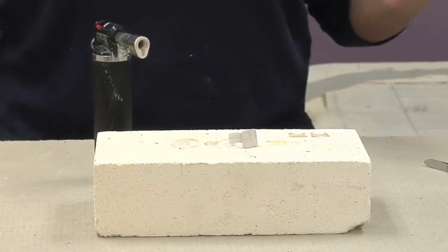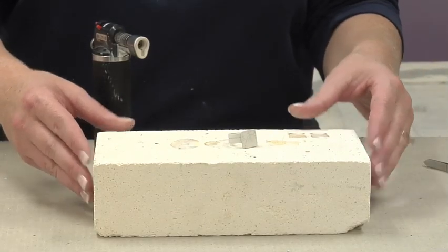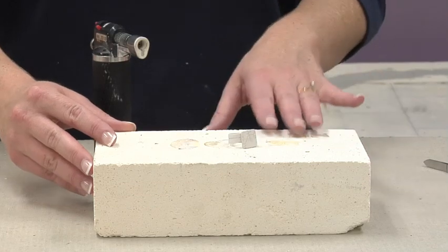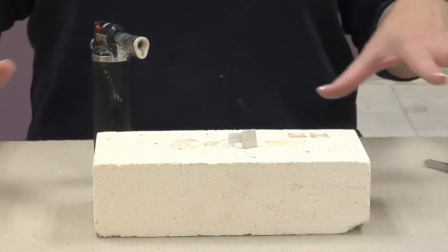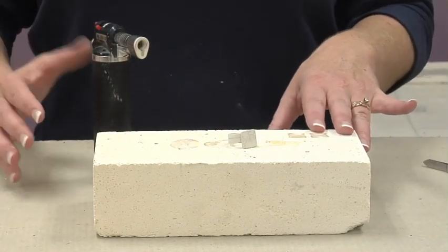Now to fire on, you're going to go ahead and need a kiln brick. This is going to be safe for us to fire on, and you want to make sure that your area is free and clear of anything else because this is going to be a flame.